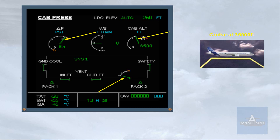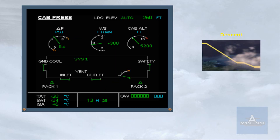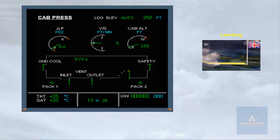In the example shown, the aircraft is in cruise at 35,000 feet. Notice the values of differential pressure and cabin altitude. During the descent phase, the pressure rate is optimized so that the cabin reaches landing field pressure just prior to landing. For passenger comfort, the automatic function will limit the rate of cabin descent to a maximum of approximately 750 feet per minute. At touchdown, the cabin altitude should be at the airfield elevation and there should be no differential pressure.